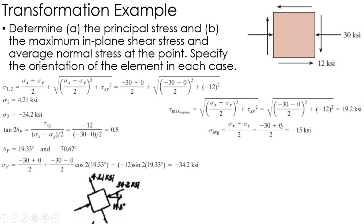That's just 30 plus 0 over 2. And my orientation is either negative 25.7 or 64.3.